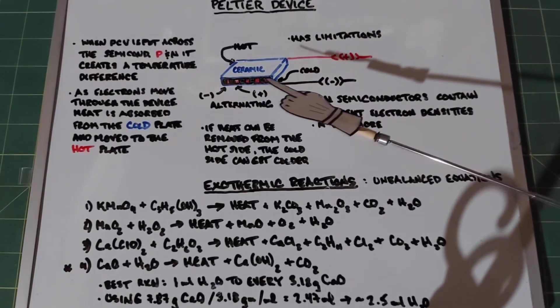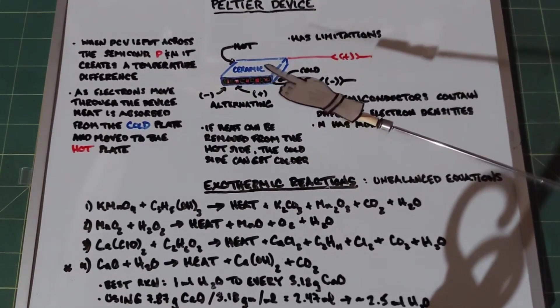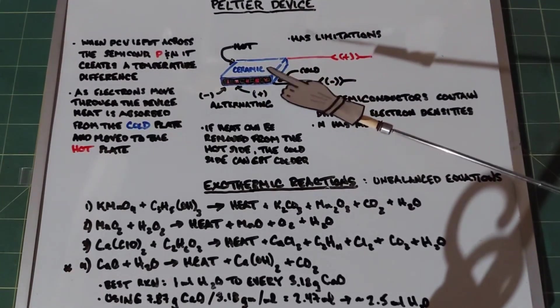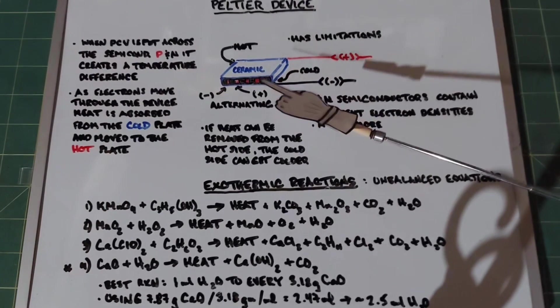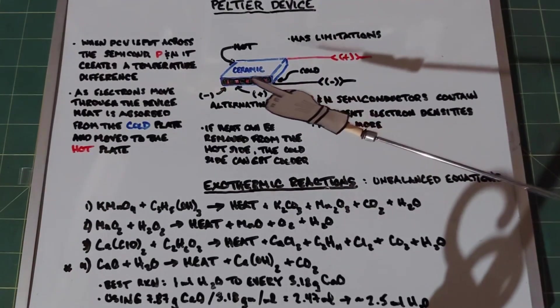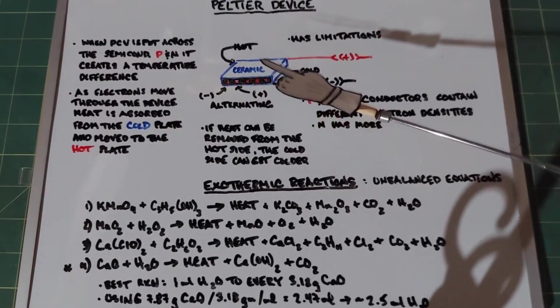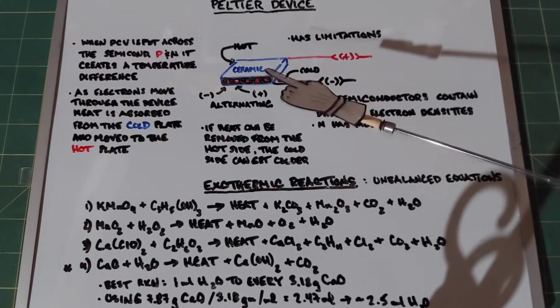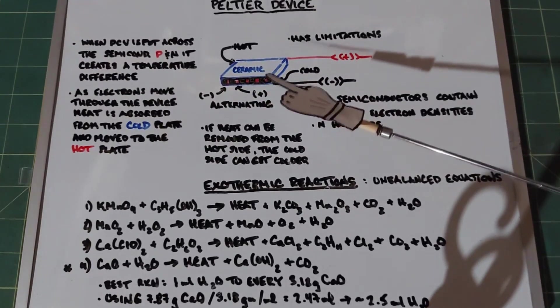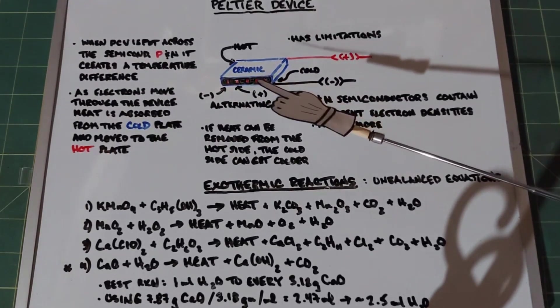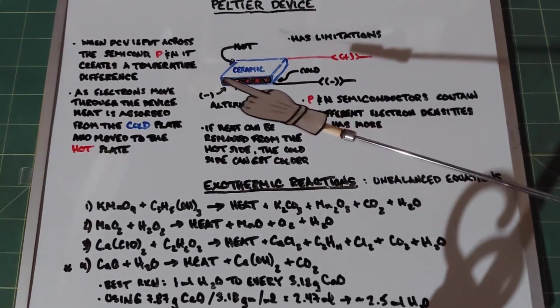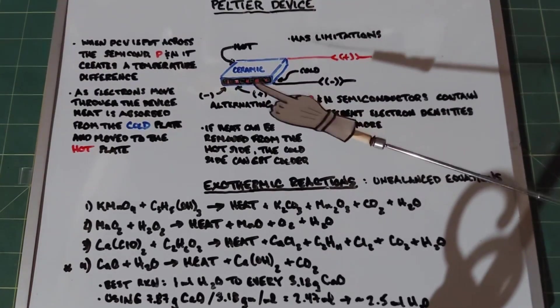They're labeled P for positive and N for negative, and each semiconductor contains a different number of electrons. The N contains more. So you're going from a high number of electrons to a low number to a high, and they're sandwiched between these two plates.